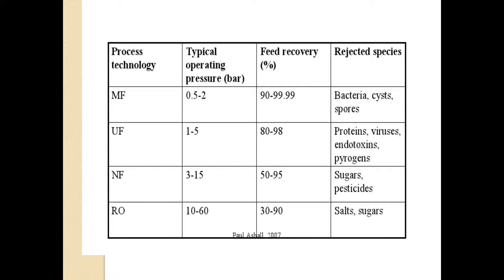Looking at process technology — typical operating pressure, feed recovery, and rejection. The typical pressure for microfiltration is 0.5 to 2 bar. For ultrafiltration it is 1 to 5 bar. For nanofiltration it is approximately 3 to 15 bar. For reverse osmosis it is 10 to 60 bar. Feed recovery: microfiltration gives 90 to 99.9%, ultrafiltration gives 80 to 98%, nanofiltration gives 50 to 95%, and reverse osmosis gives 30 to 90%.